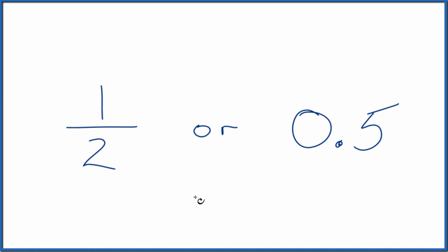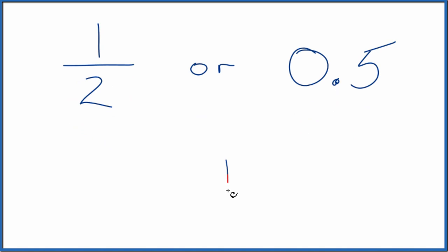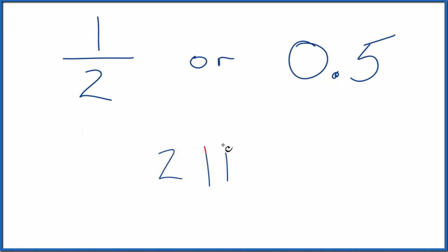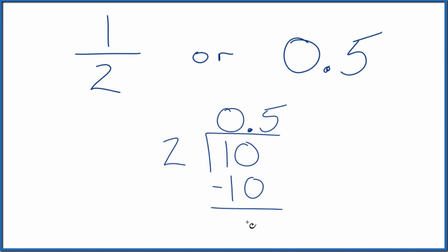We could also do that longhand. So we have 1 divided by 2. How many times does 2 go into 1? It doesn't go into 1, make this 10, put a 0 with a decimal place. Now 5 times 2, that's 10. Subtract, no remainder.